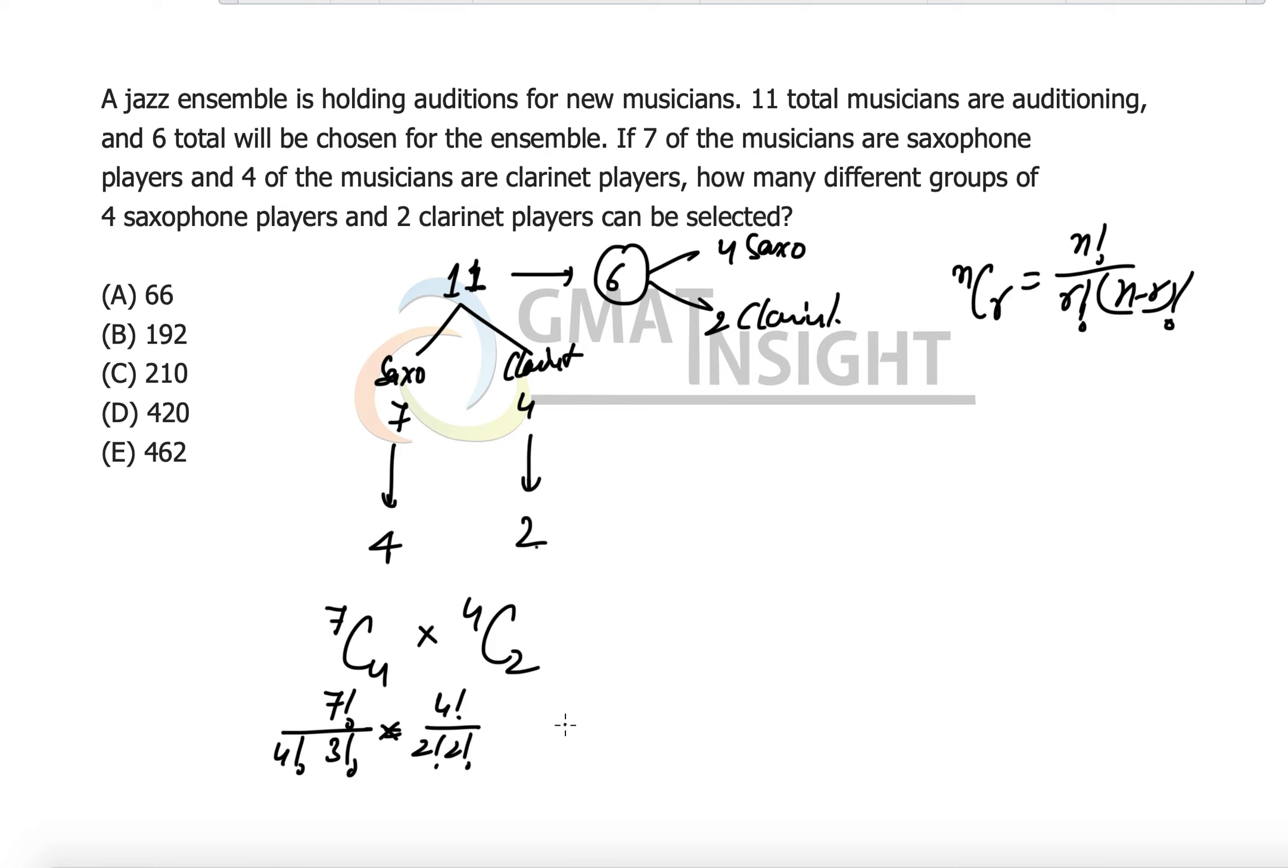Now all you have to do is just simply calculate it. So we have 7 × 6 × 5 × 4 factorial divided by 4 factorial times 3 factorial, which is 6. And 4 factorial over 2 factorial × 2 factorial becomes equal to 6. So we have 7 × 5 = 35 multiplied by 6, which equals 210.